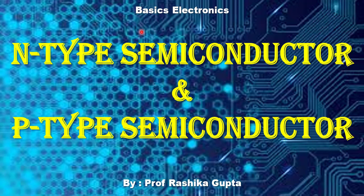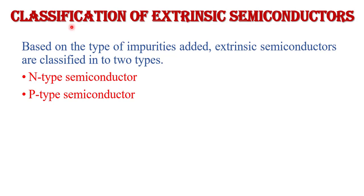Welcome to Quick Learn Tutorial Series. In this video I will explain N-type semiconductor and P-type semiconductor. Before discussing the classification of extrinsic semiconductors, we need to know what extrinsic semiconductors are. Semiconductors in which impurities are added are called extrinsic semiconductors — when impurities are added to an intrinsic semiconductor, which is the pure form, it becomes an extrinsic semiconductor. The process of adding impurity to a pure semiconductor is called doping.